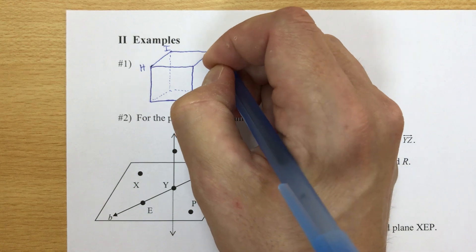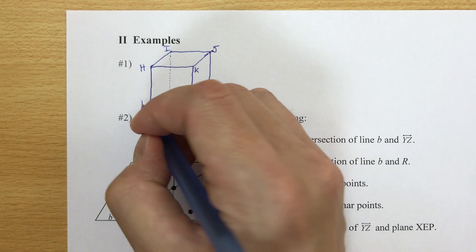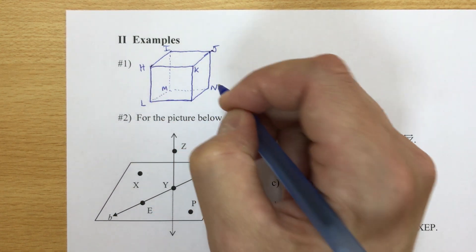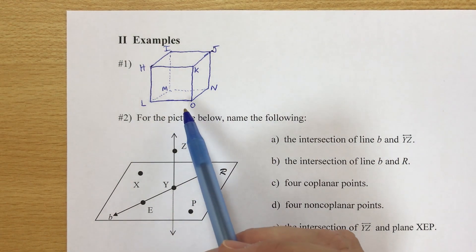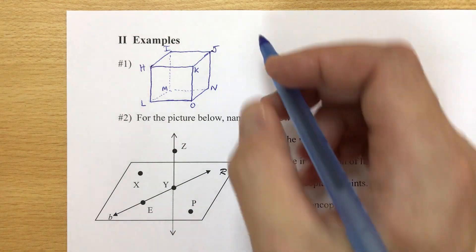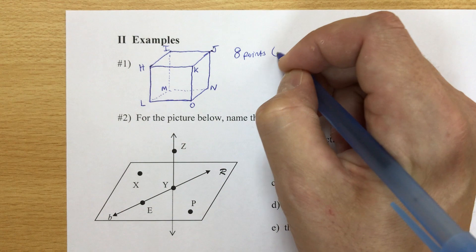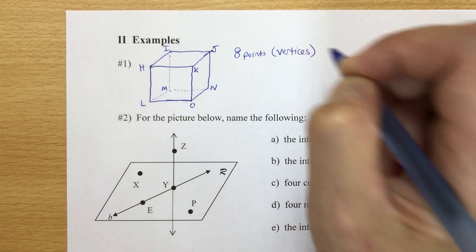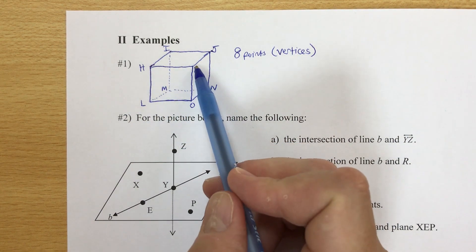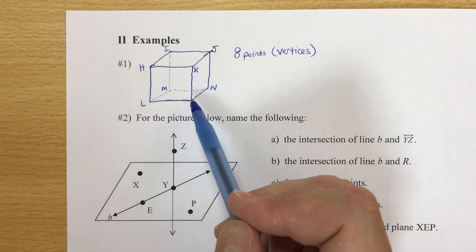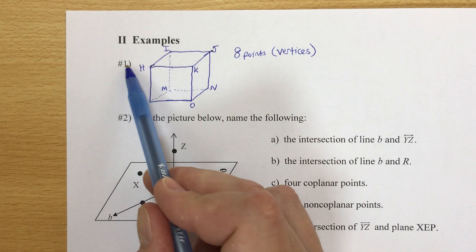Now I'm going to label the points. The top I'll call H, I, J, K and the bottom L, M, N, and O. The points are called vertices — each one is a vertex. We have eight vertices: H, I, J, K is four, and L, M, N, O is four more.